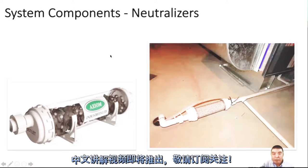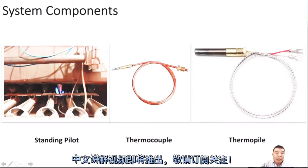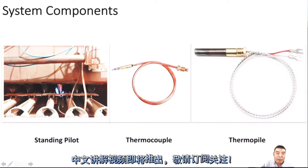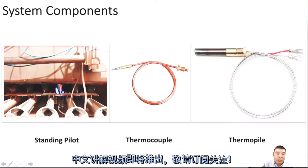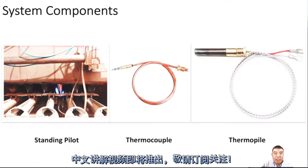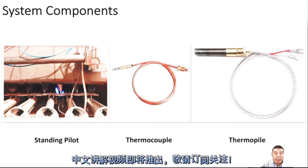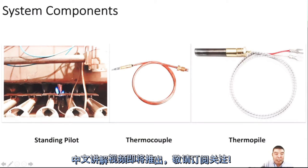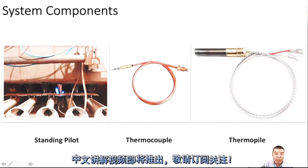This is a standing pilot on a category one furnace. This small flame is always there — it doesn't matter if it's summer or winter, whether we need heat or not. This just makes the furnace efficiency lower. We can see this aluminum pipe goes to the gas valve. Normally the gas valve has a knob with off, on, and pilot positions. We turn it to pilot and press down so gas comes out of this small pipe, then use a barbecue lighter to light the pilot and hold that knob for about 30 seconds.